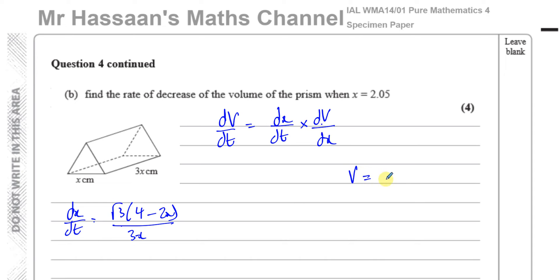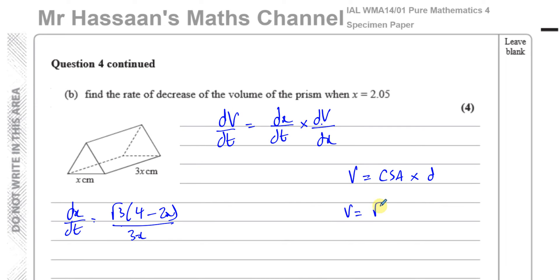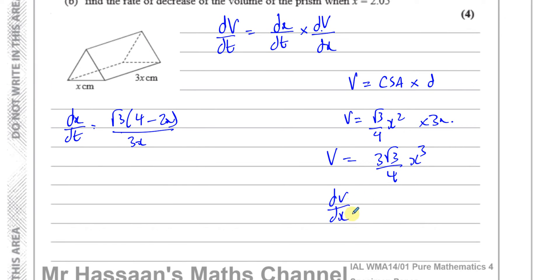The volume of the prism is the cross-sectional area times the depth, which is 3x. The cross-sectional area is root 3 over 4 times x-squared, so the volume is 3 times root 3 over 4 times x-cubed. Differentiating, dV/dx equals 9 times root 3 over 4 times x-squared.